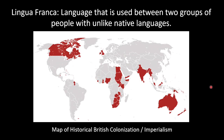Now let's get back into colonization and influence and look at lingua franca. Lingua franca is language that is used between two groups of people with unlike native languages. Here we have a map of historical British colonization and imperialism. English is the dominant lingua franca. Swahili, French, and Mandarin are other languages used as lingua franca, but English is the number one one. For example, Brazil wants to communicate with people in Spain. People in Brazil primarily speak Portuguese, and people in Spain primarily speak Spanish, so they would both learn English to communicate — that is an example of using a lingua franca.